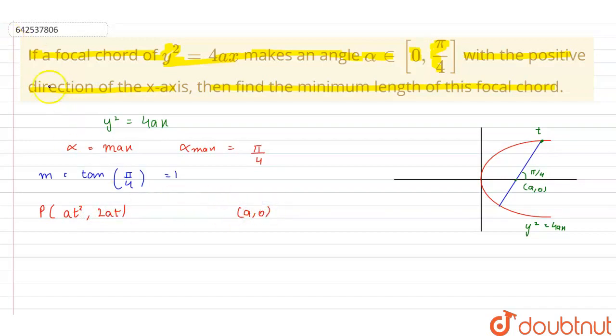Now, since the line joining them has the slope equals to 1, therefore, we can say that 2at-0 upon at²-a will be equal to 1. So, solving this equation to get the value of t,